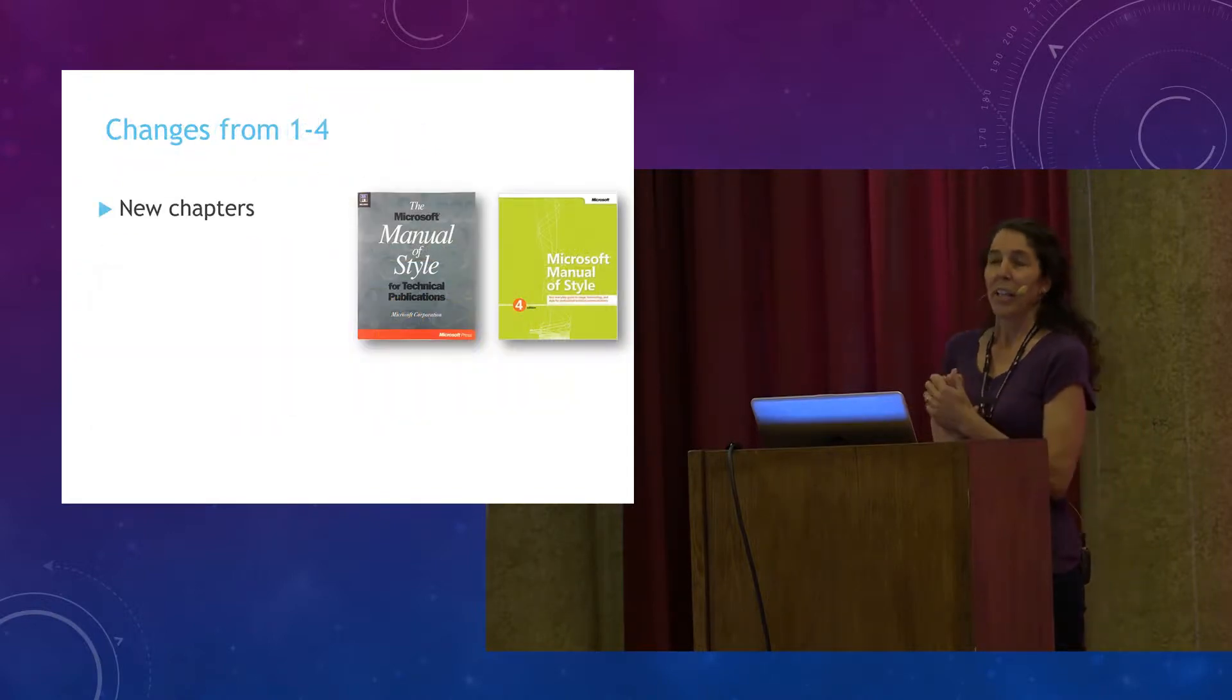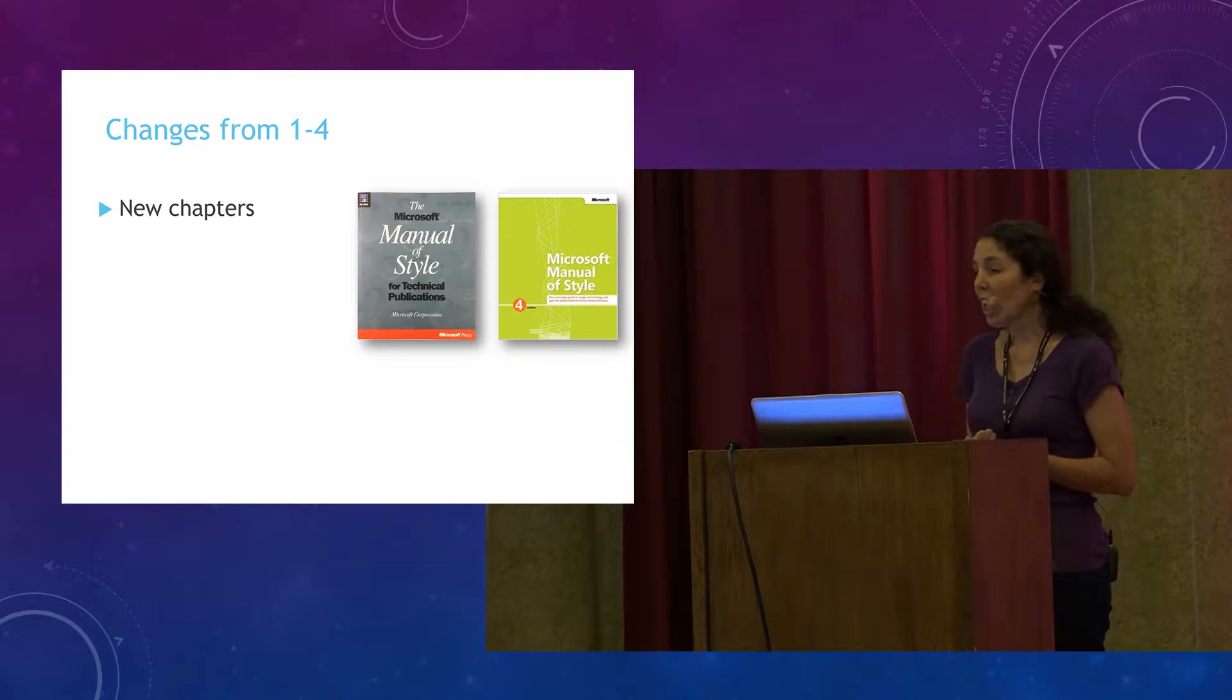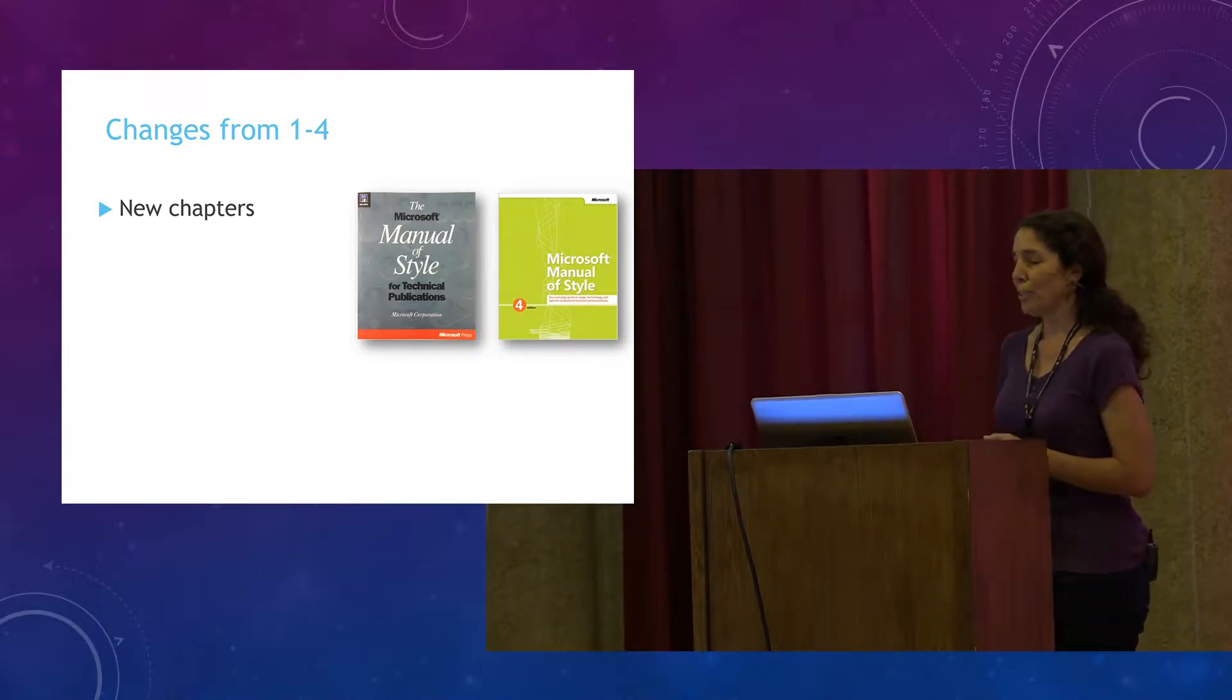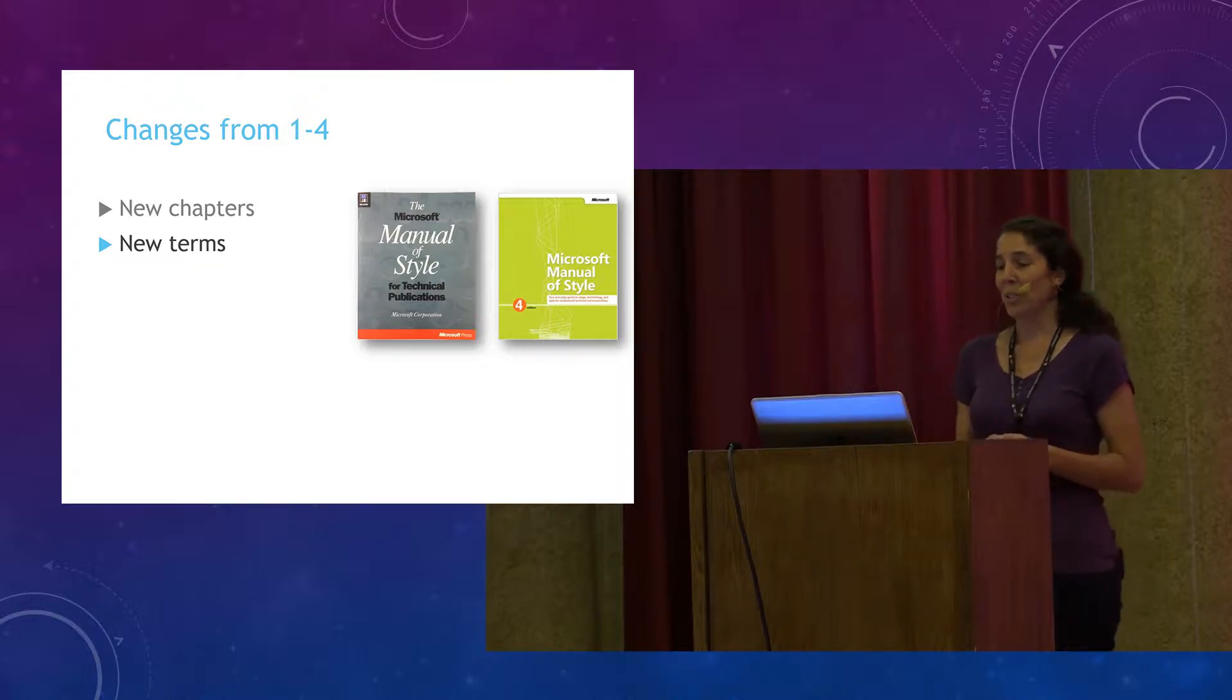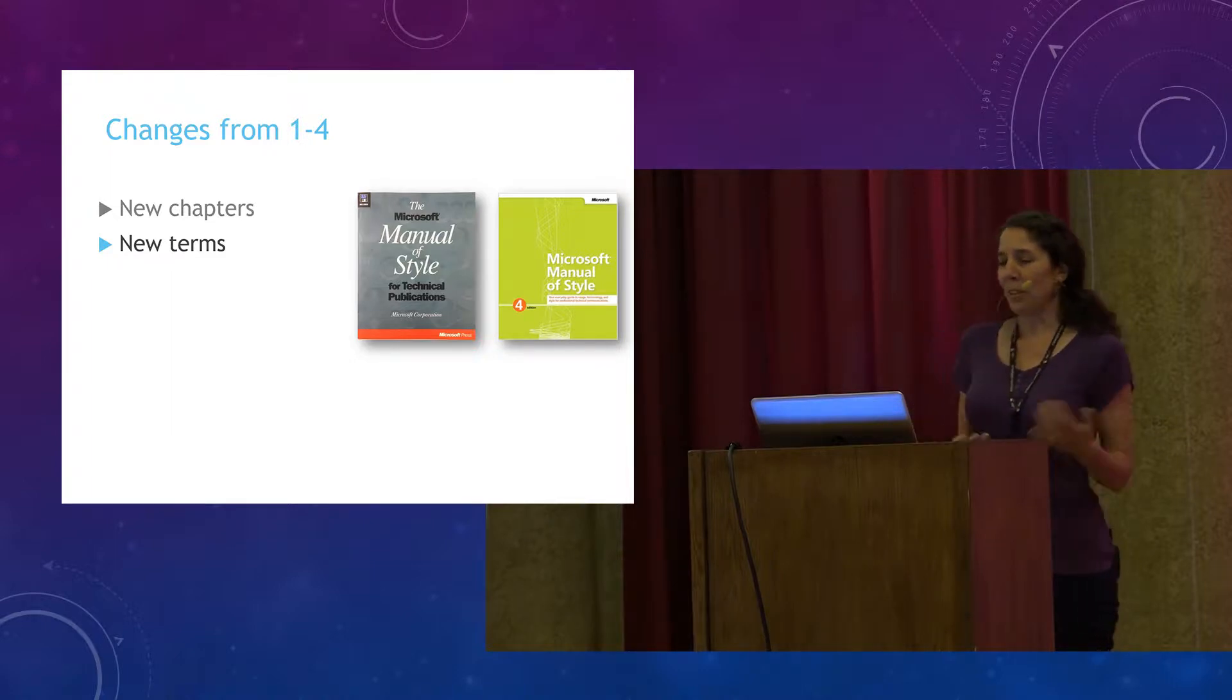So what's changed? They added a bunch of new chapters in the latest version. Chapters on global content, bias-free communication, gesture guidelines, social media guidelines, even strategies for search engine optimization. And they introduced new terms. From the first to the fourth edition, we had Java, JavaScript, URL, blog, app, cloud, email lost its hyphen, website became one word in lower case.